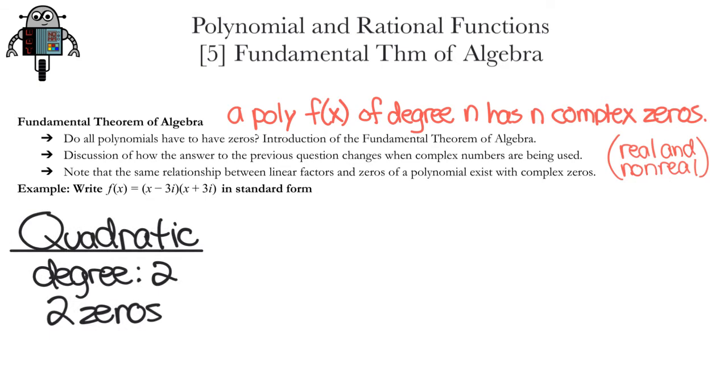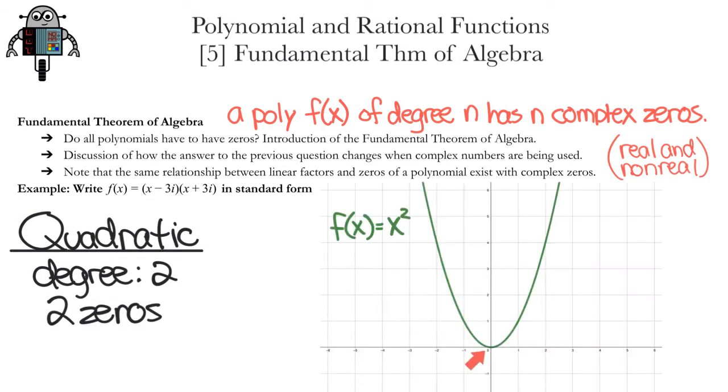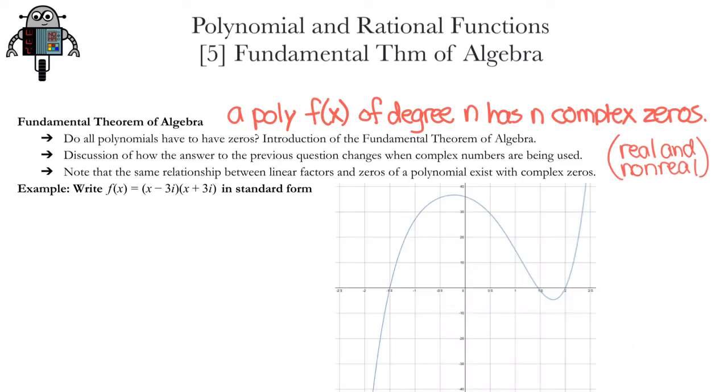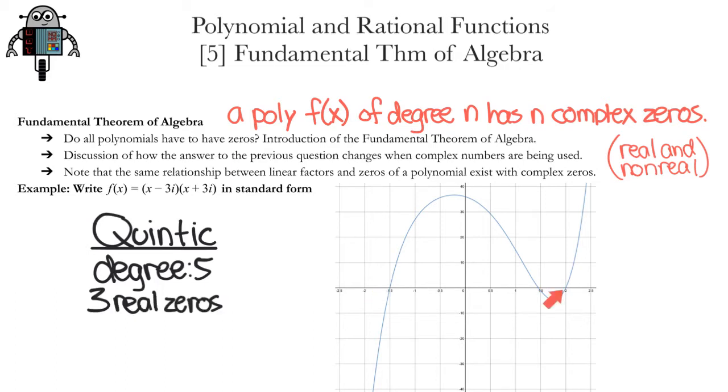For the quadratic function x squared, there's only one zero, which happens to be an x-intercept. But that zero has a multiplicity of 2. You might also recall an example from 4b for a quintic function. The degree was 5, and we saw three zeros on the graph.